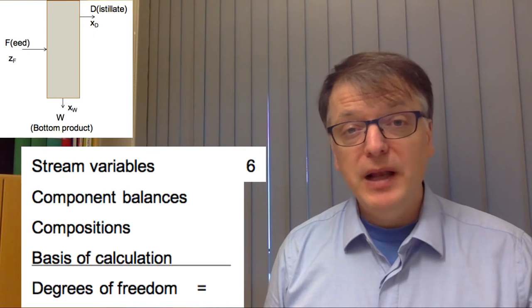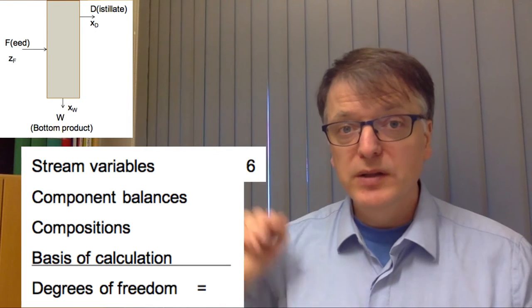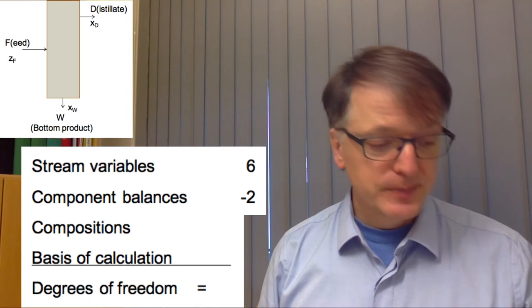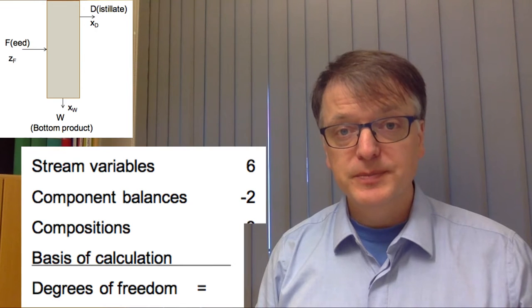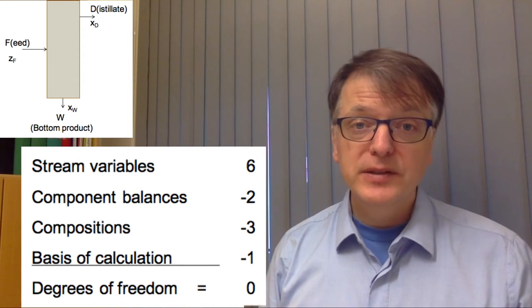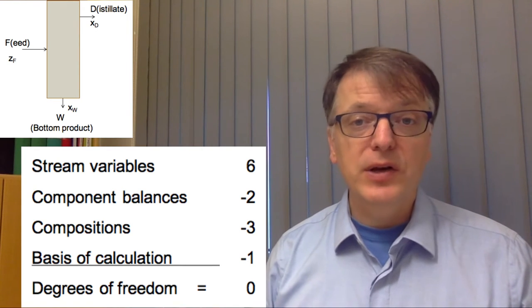Okay, how many component balances can you make? Well, you have two components and you have just one system, so you can only make two component balances. How many knowns do we have? Well, we know three compositions. And as you see, if we just take one basis of calculation, we have zero degrees of freedom left and we can calculate everything.